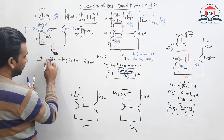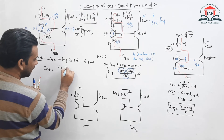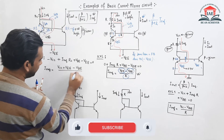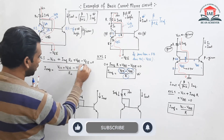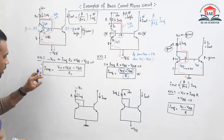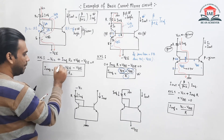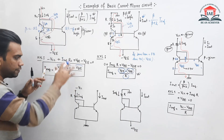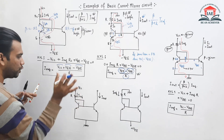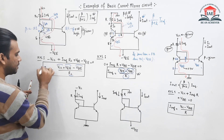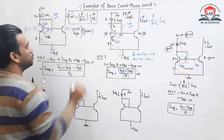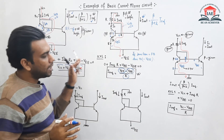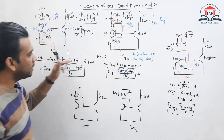So I reference equals VCC plus VEE minus VBE, divided by RC. The VCC value, VEE value, VBE value, and RC value will all be provided in the examination. You put the values, find I reference, then substitute I reference into the I out equation and calculate the output current. This is the procedure to calculate the output current for a current mirror circuit.